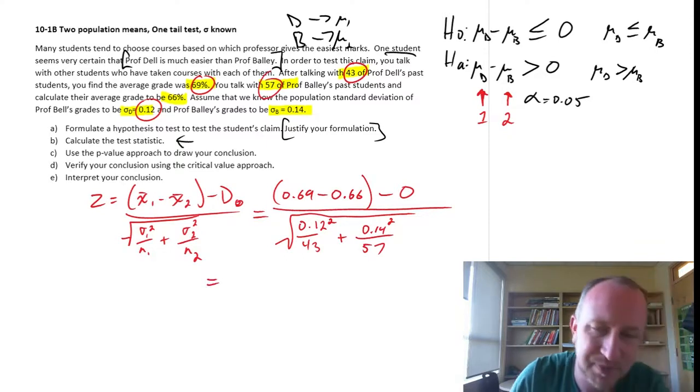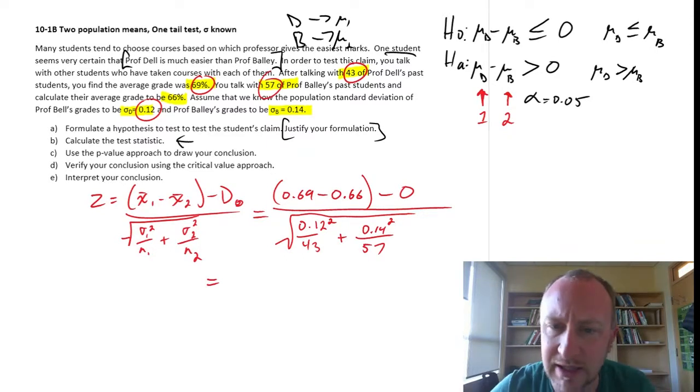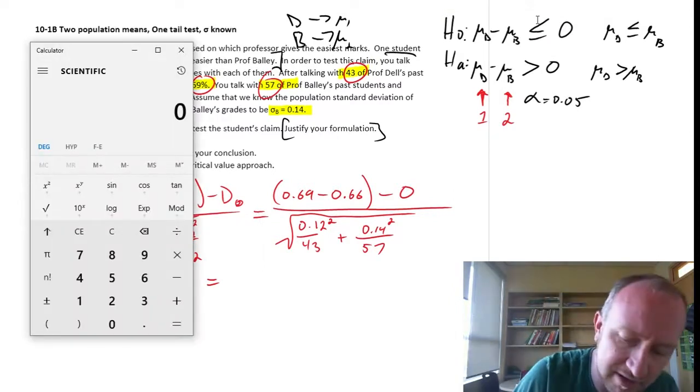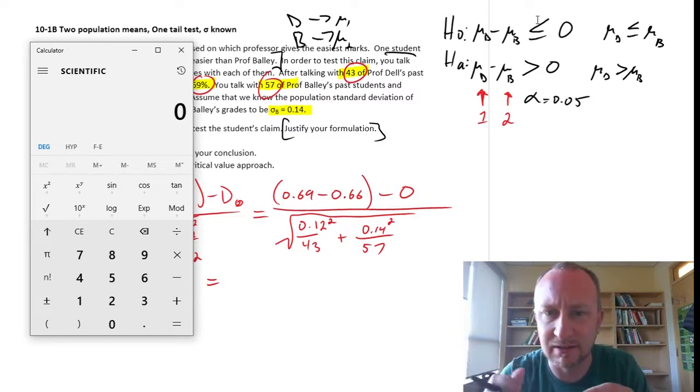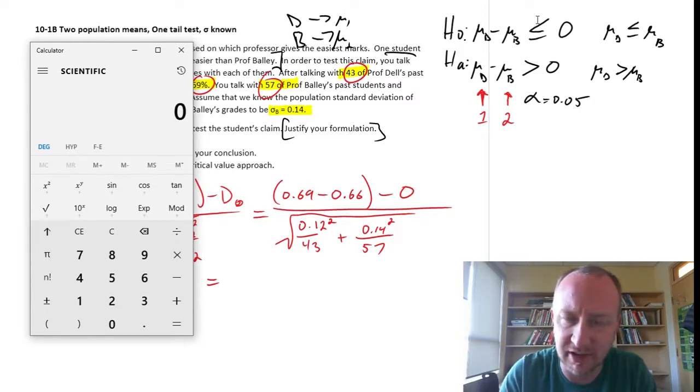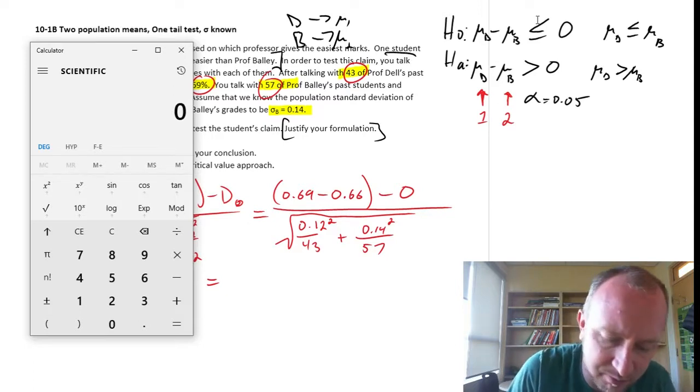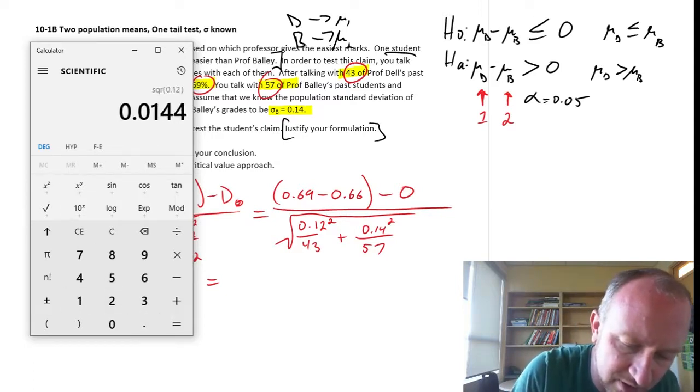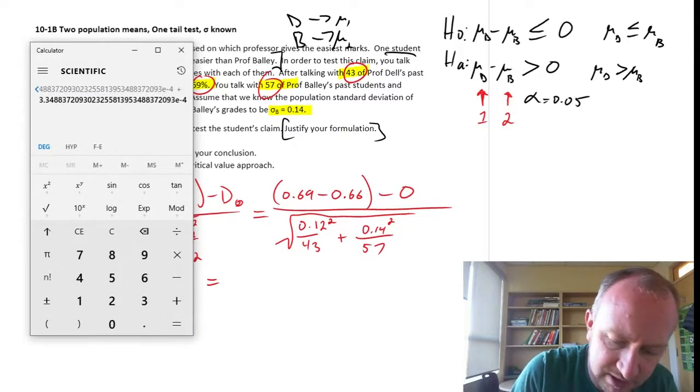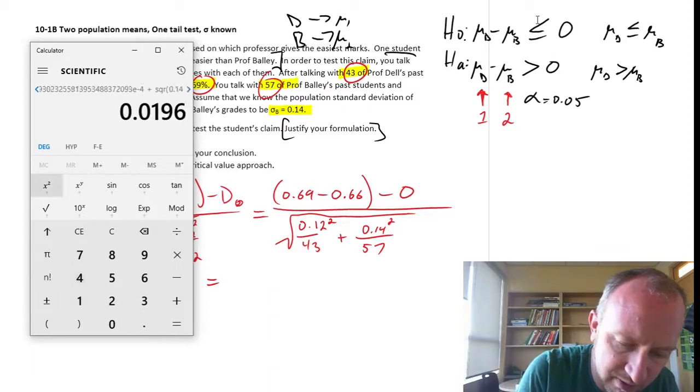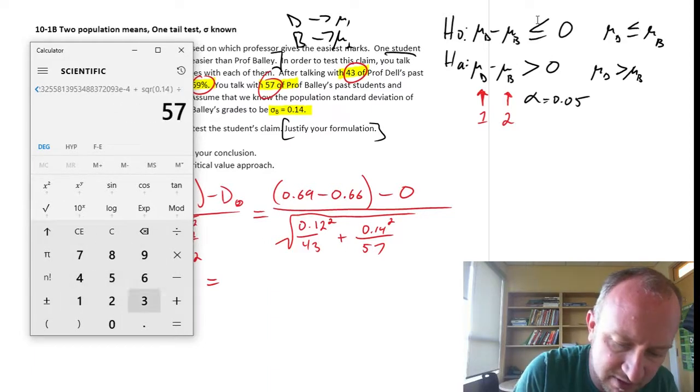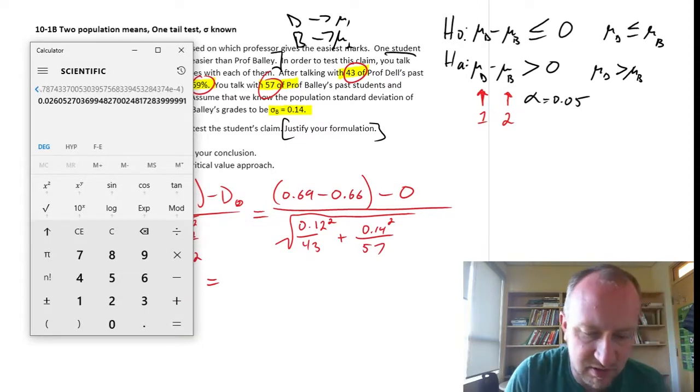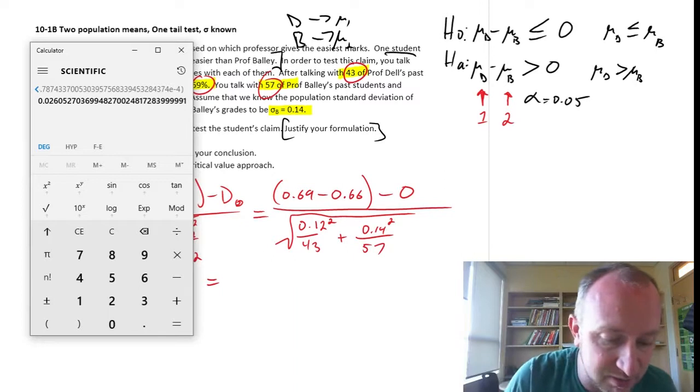And the standard error, Professor Dell is 0.12 divided by, how many do we have of his, 43 students? Plus, and that's squared, plus 0.14 squared over, how many of Professor Bailey do we have? 57. So hopefully I've got everything in there right. It's one of those things where you've got the formula and that should make it easier, but it's still important that you make sure you put the numbers into the formula in the right way. Otherwise, silly mistakes happen. So I always start with the more complicated part of the calculation. I'm going to start in the denominator at that 0.12 squared.